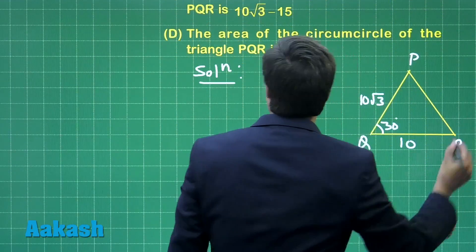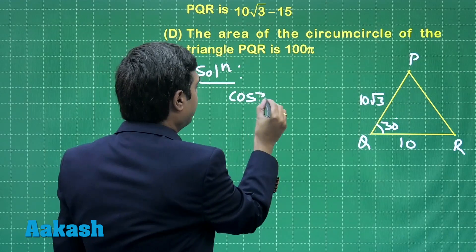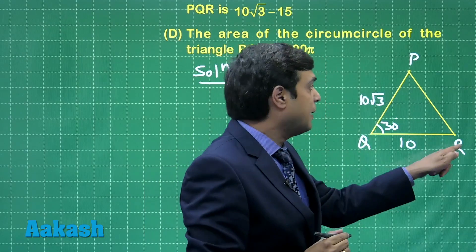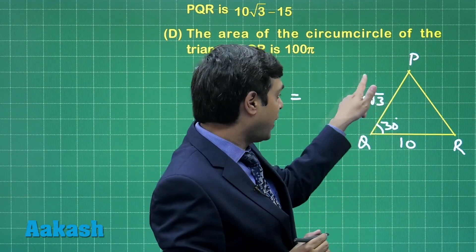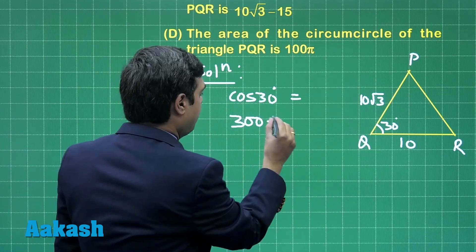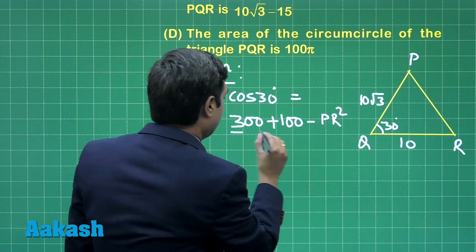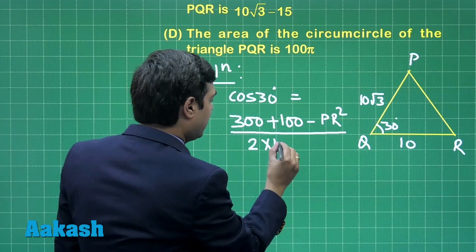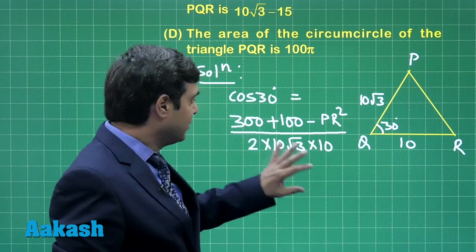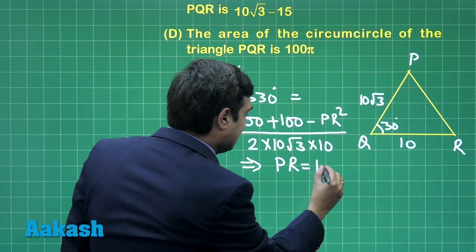Starting it, using cosine rule in this triangle we can say cos 30 is equal to PQ square plus QR square minus RP square divided by twice of product of these two sides. This is 300 plus 100 minus PR square divided by 2 into 10 root 3 into 10. Cos 30, that is root 3 by 2, just cross multiply and simplify to get the value for PR as 10 units.